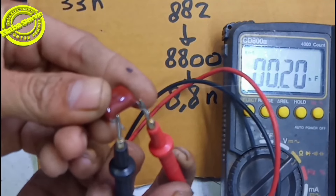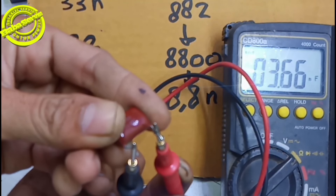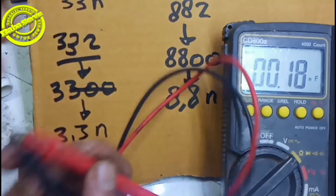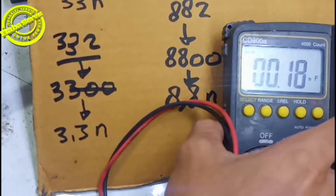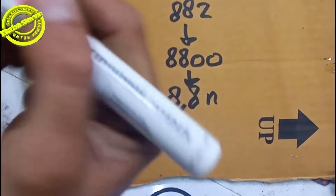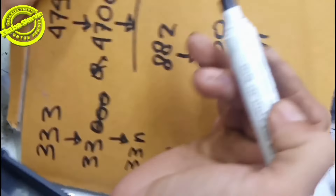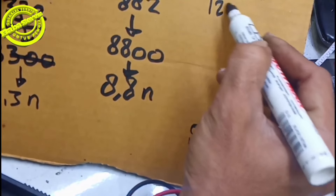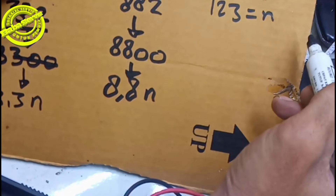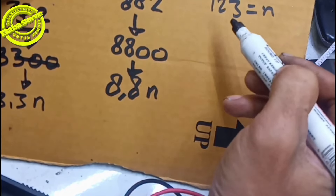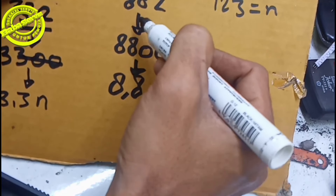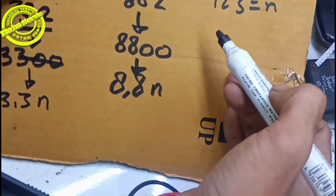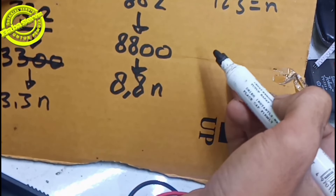Walaupun sudah dicaret, tidak bisa dibilang kosong karena di sini masih menyatakan nilai. Berarti 3,3 Nano. Kita ukur: 3,66 Nanofarad — amat sangat bagus. Ada juga teman-teman yang mempertanyakan: 'Bang, apabila diparalel bagaimana?'